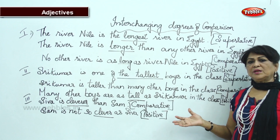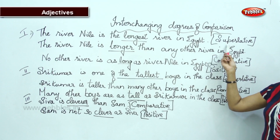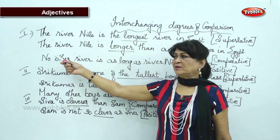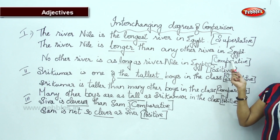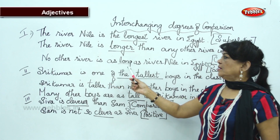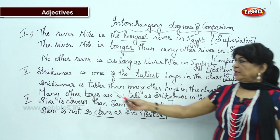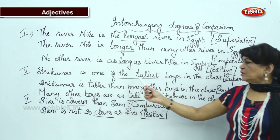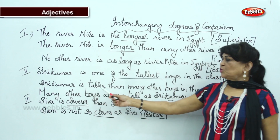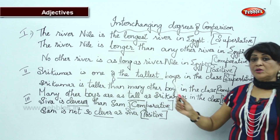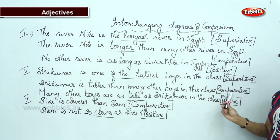Let me review. The River Nile is the longest river in Egypt — 'longest' is superlative. The River Nile is longer than any other river in Egypt — that is comparative. No other river is as long as River Nile in Egypt — this is positive degree. Now the second pattern: Shri Kumar is one of the tallest boys in the class — superlative. Shri Kumar is taller than many other boys in the class — for 'one of the' pattern, you must use 'many other,' not 'any other' — that is comparative.